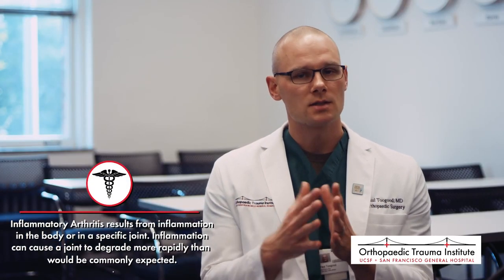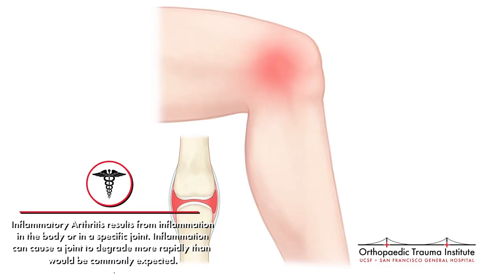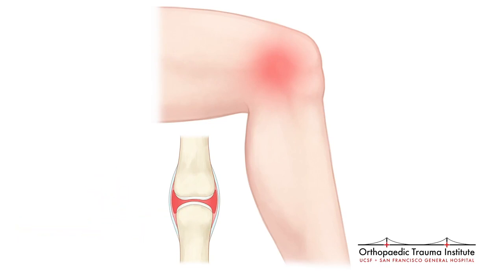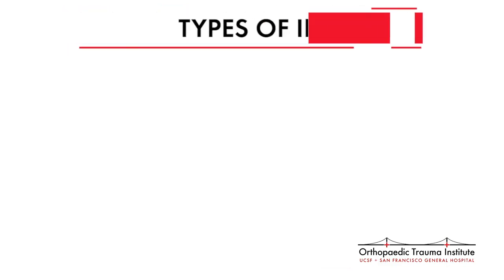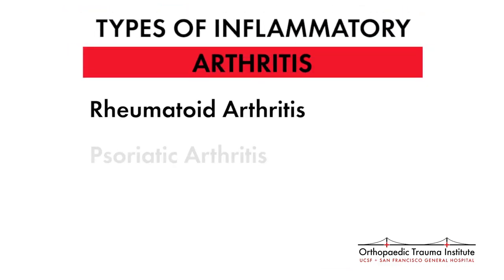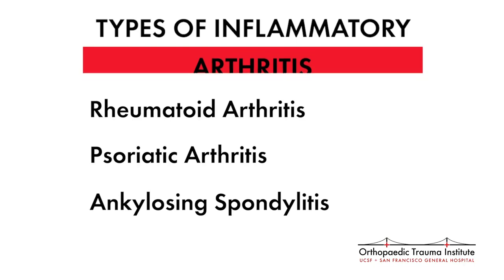Another common cause of arthritis is inflammatory arthritis. Whereas osteoarthritis is mostly a mechanical phenomenon, inflammatory arthritis occurs in an individual who has more inflammation in their body than normal. When there's a lot of inflammation in a joint, it can lead to the destruction of that joint more rapidly than we would normally expect. Common examples include rheumatoid arthritis, psoriatic arthritis associated with psoriasis, and ankylosing spondylitis, which is a form of systemic inflammation that tends to affect young men.